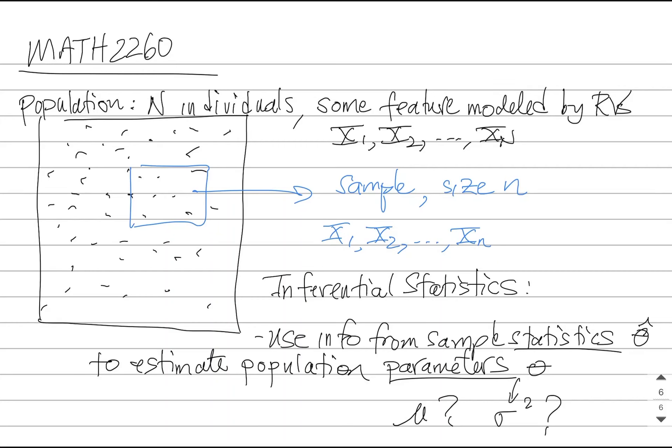Now we're focusing on a population with capital N individuals and there's some feature of that population and those individuals that we're interested in. So we assign random variables to each individual and the random variable will represent the feature that we're interested in.